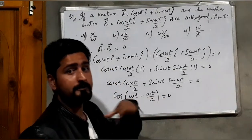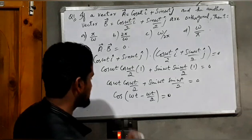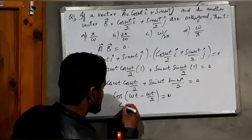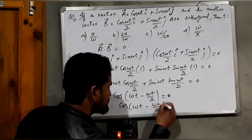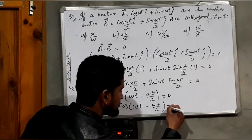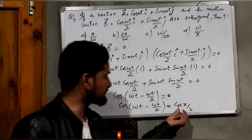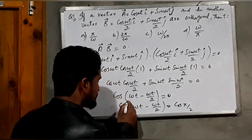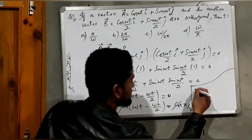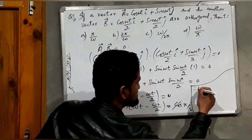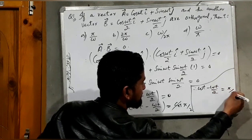When cosine is zero, the angle is 90°, meaning cos(90°) equals zero. So we can write cos(ωt − ωt/2) equals cos(π/2), because cos(π/2) equals zero, and the cosine terms cancel. Therefore, ωt − ωt/2 equals π/2.